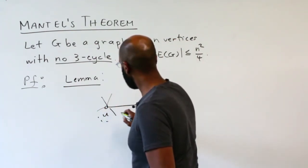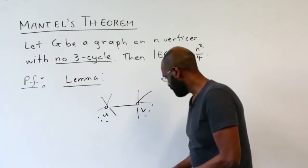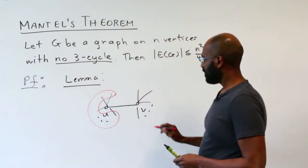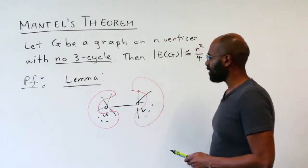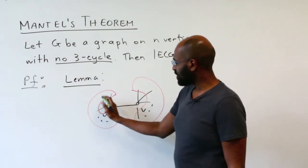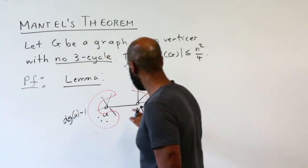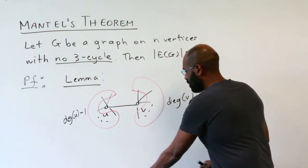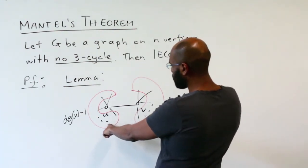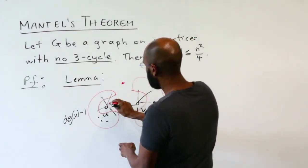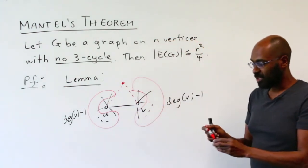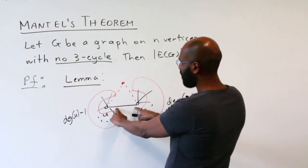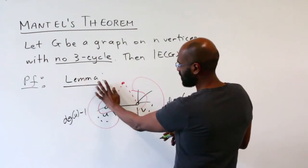Let's look at the vertices adjacent to v and the vertices adjacent to u. I'll make a cloud for the vertices adjacent to u, excluding v, and similarly a cloud for vertices adjacent to v, not including u. The number of vertices in the first cloud is the degree of u minus one, and the number in the second cloud is the degree of v minus one. Since this graph has no three-cycles, these two sets are disjoint — a vertex in both would be adjacent to u and v, forming a three-cycle, which is forbidden. These two sets also don't include u or v.